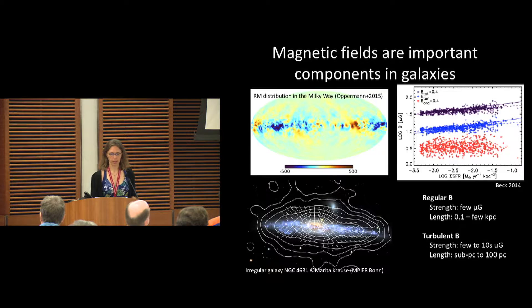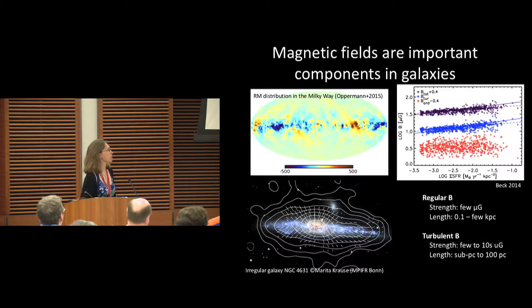When we look at nearby galaxies, we can see these large-scale structures in the magnetic fields. For example, this is an edge-on disk galaxy where we've got coherent structures coming out of the disk.